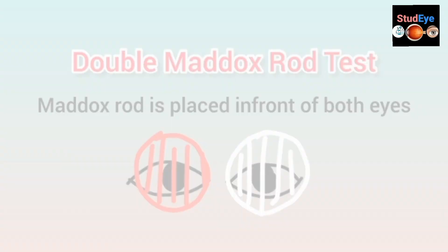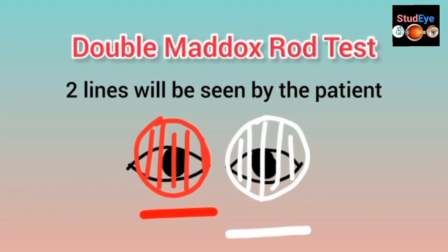The red filter will give us a red streak, and the white Maddox rod will give us a white streak. The patient will see two streaks. Since I have placed the Maddox rods vertically, the streaks observed by the patient will be horizontal. This way we can evaluate incyclophoria and excyclophoria in the patient's eye.